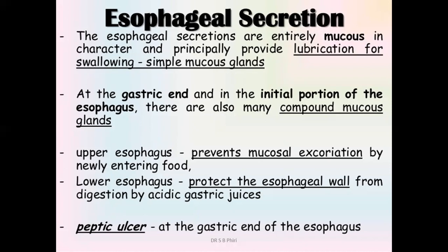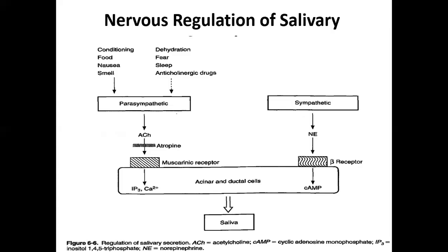That covers saliva production control — both neural and hormonal mechanisms. For example, pregnant women often produce more saliva because certain pregnancy hormones affect saliva production centers. Some also experience nausea, affecting the vomiting center. These are exceptions to note when hormonal changes influence the regulation of saliva production.